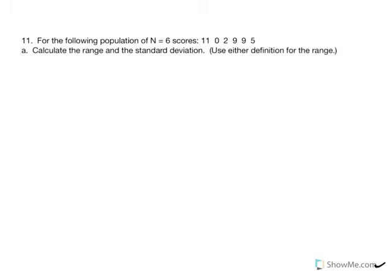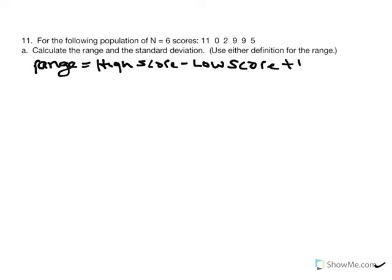Number 11. We have a population with 6 scores. We're asked to calculate the range and standard deviation. For the range, using high score minus low score plus 1: our high score is 11, low score is 0, plus 1 gives us 12. That represents the range of scores. Next, we calculate standard deviation using the computational formula.